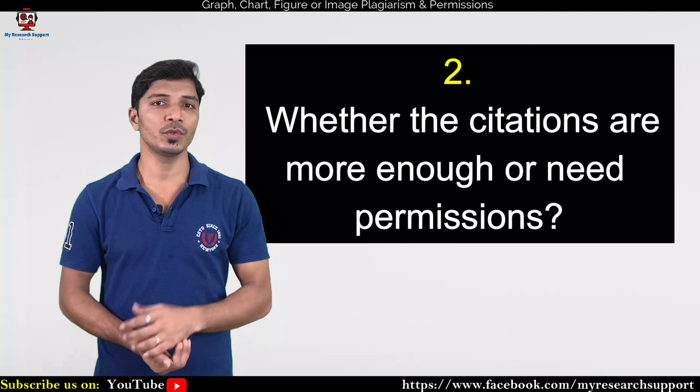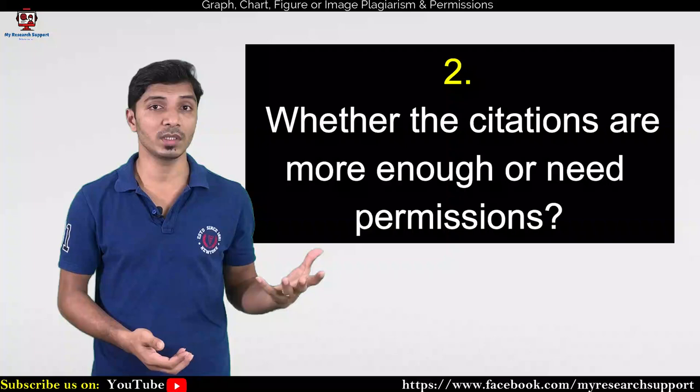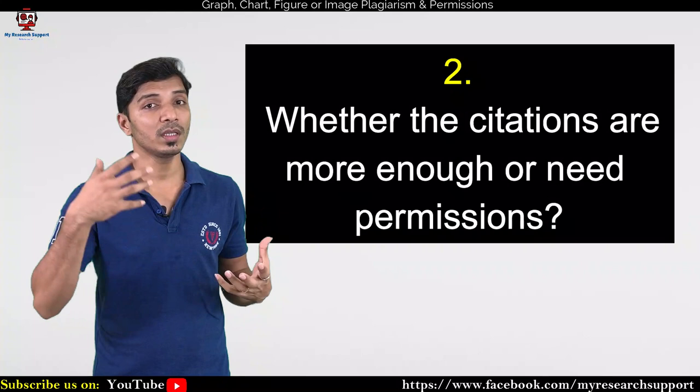Now the second question: are citations alone enough to use these figures? Obviously no — you have to go for permissions. And where do you get permissions? From the publishers, not the authors, because when we sign a copyright form we give all rights to the publisher where we submit our research article. Publisher-wise, the method of obtaining permission will vary.